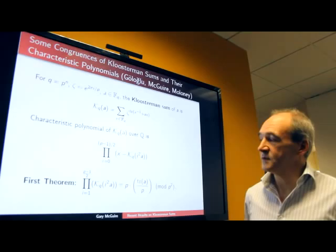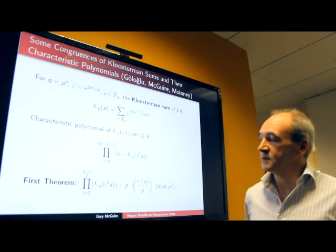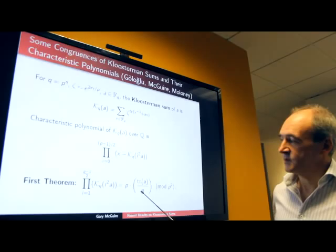Our first theorem concerns the coefficients of the characteristic polynomial. The characteristic polynomial, by the way, is almost always the minimal polynomial for almost all a, but there are a few a's for which that's not true.